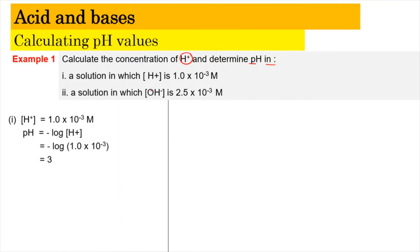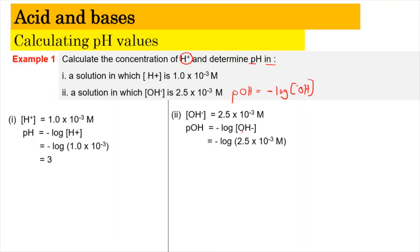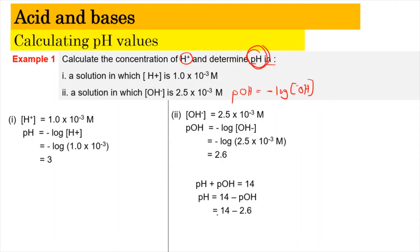For part two of Example 1, we're given [OH⁻] = 2.5 × 10⁻³ mol/L. When given the hydroxide concentration, we find pOH first: pOH = −log[OH⁻]. Substituting gives pOH = 2.6. Since the question asks for pH, we use pH + pOH = 14, so pH = 14 − 2.6 = 11.4.